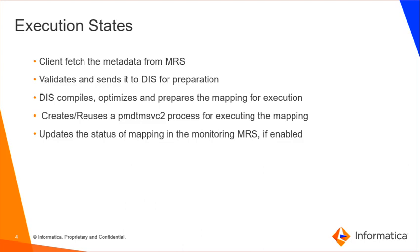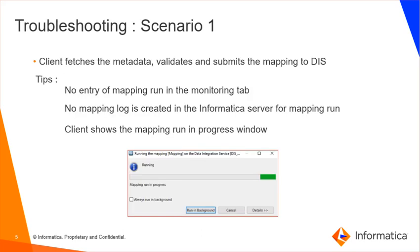Performance issues could occur in any of the phases of a mapping run, and we need to know what diagnostics to collect at each phase. The first phase of mapping execution is metadata fetch and validation. If the mapping is complex with many transformations, maplets, and pipelines involved, or if the mapping metadata has issues, it could lead to a prolonged validation phase. After submitting the mapping from the developer client, if certain symptoms are seen, it is a probable case of validation slowness.